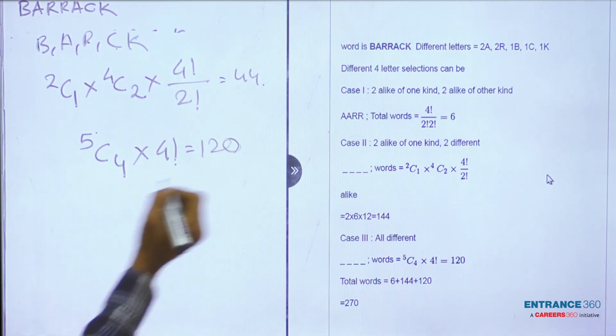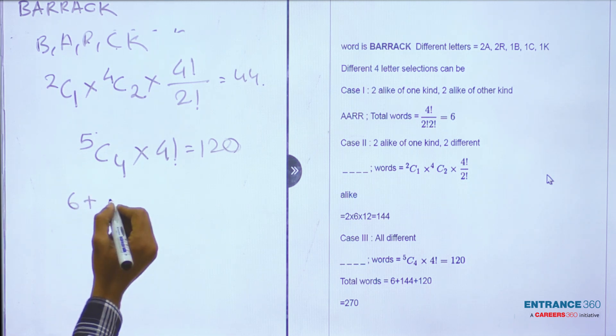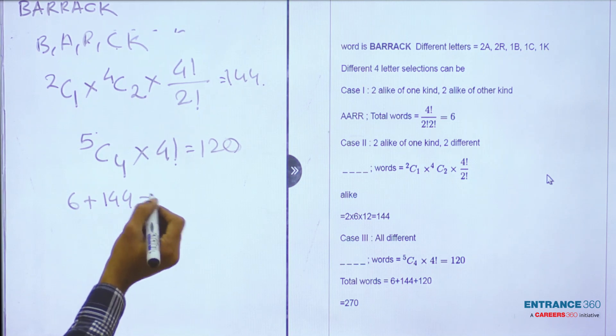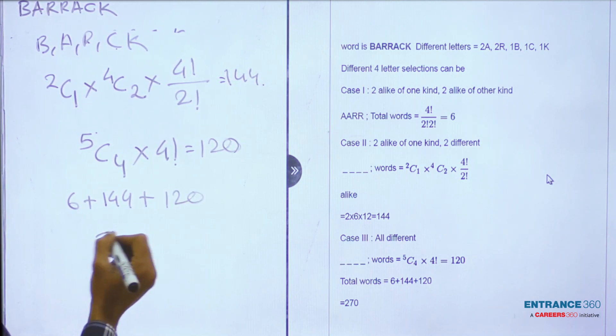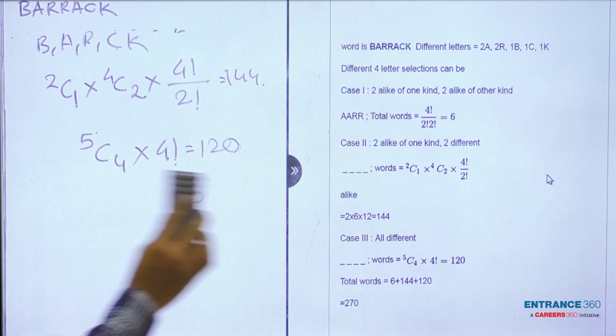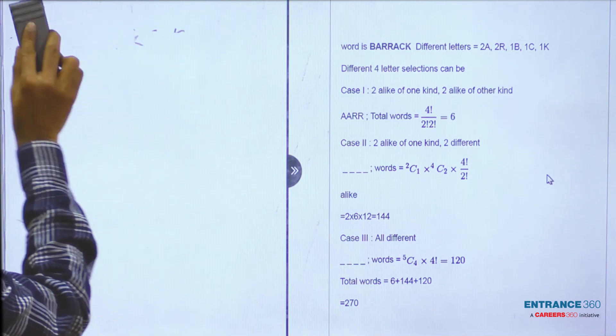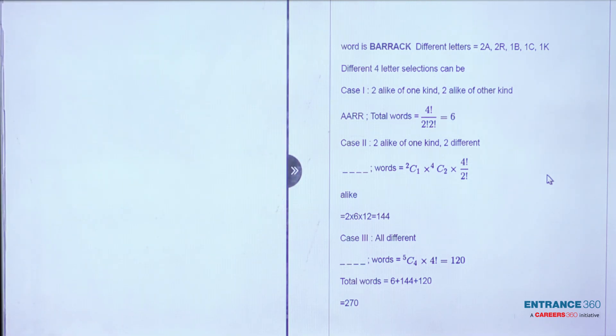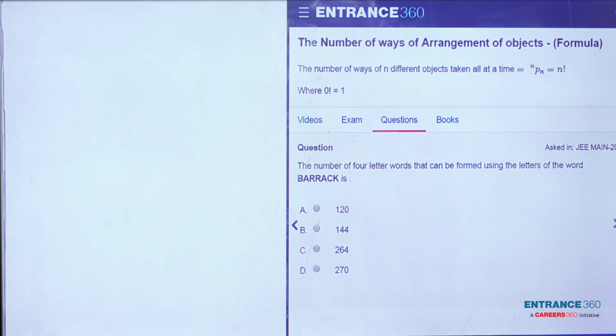So just add all these values: 6 plus 144 plus 120. After calculation you get the total number of words will be 270. Now let's go back and check which option is correct. We get option D, 270, is correct.